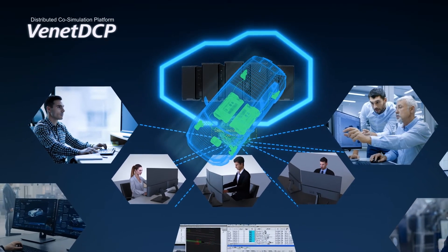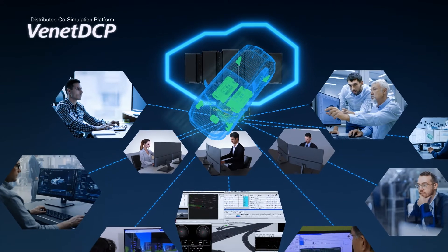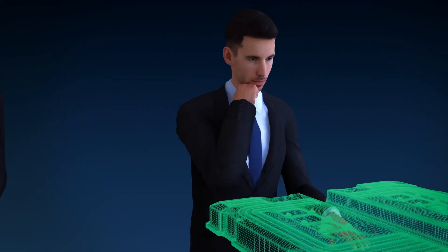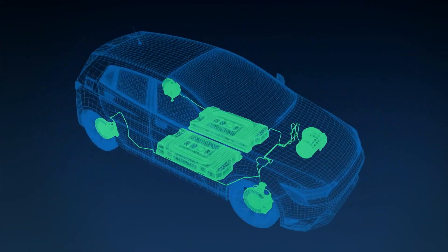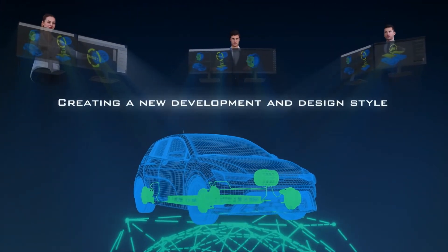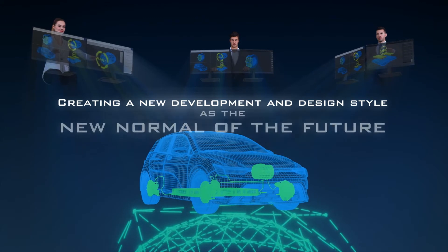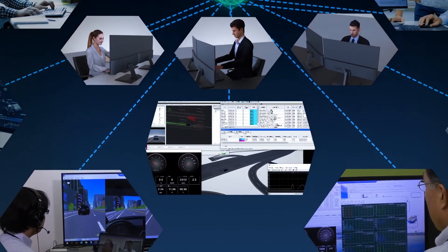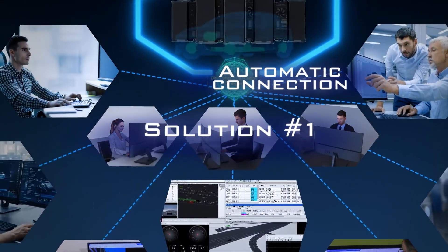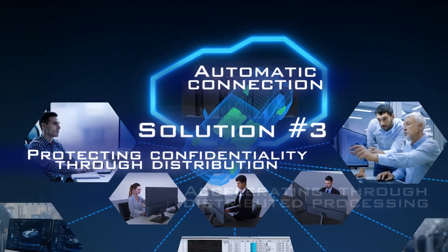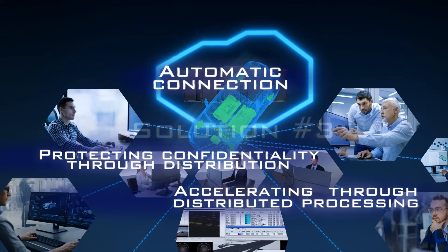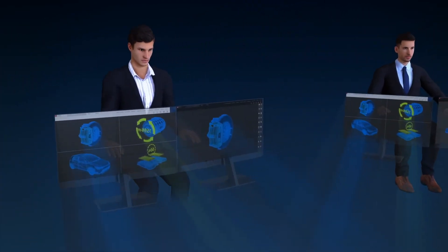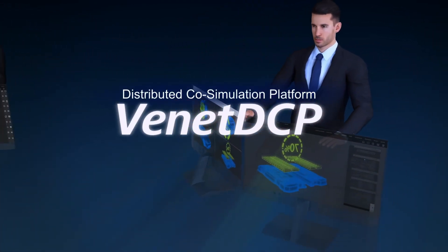It can perform high-performance simulations even when working with numerous development partners. Venet DCP connects varied data and models from separate locations as if they were connected in the real world. It is creating a new development and design style that will become the new normal of the future. There have been many success stories in the automotive industry and expectations are high. Venet DCP can be used in all manufacturing areas for model-based design — bringing models together while keeping them where they are. The Venet DCP distributed co-simulation platform.